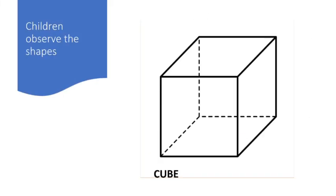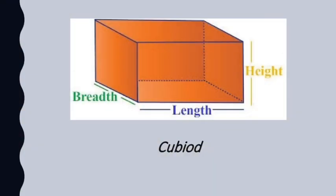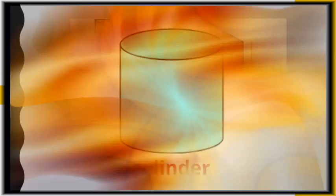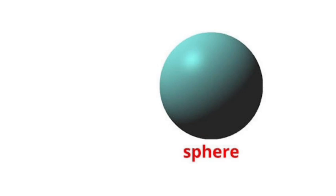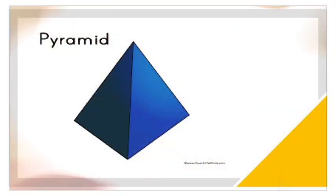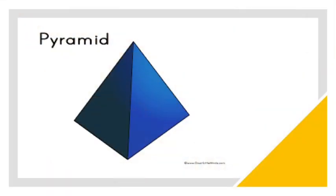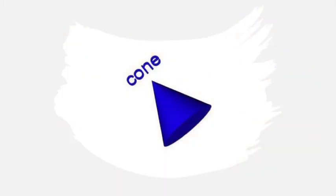Children, observe the shapes. What is this, children? It is cube. Next, cylinder, sphere, pyramid, cone.